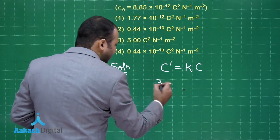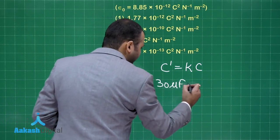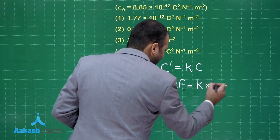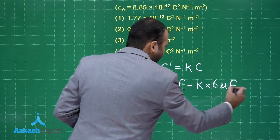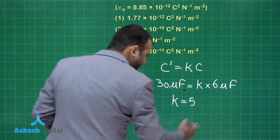This is with medium. It is 30 microfarad. This is K and this is 6 microfarad. With this we will get K equals 5.